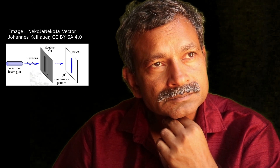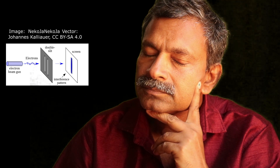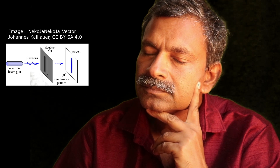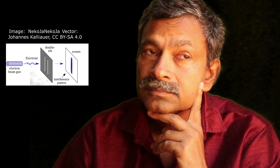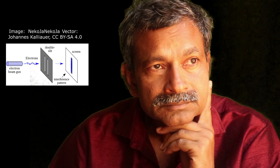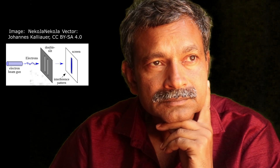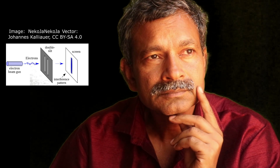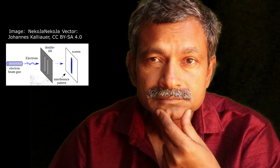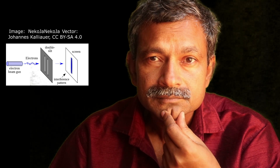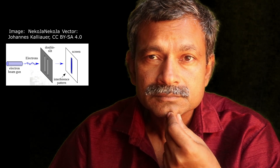Without observation: when electrons are fired through the double slit without any attempt to determine which slit they pass through, they exhibit wave-like behavior. This is evidenced by the appearance of an interference pattern on the screen, reflecting the constructive and destructive interference of the electron waves passing through both slits simultaneously.